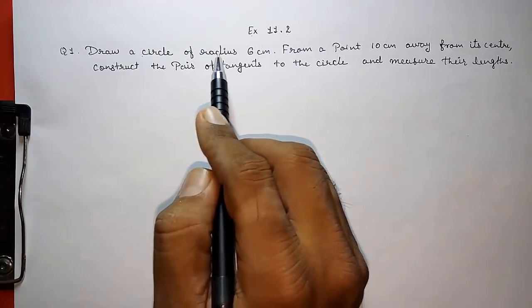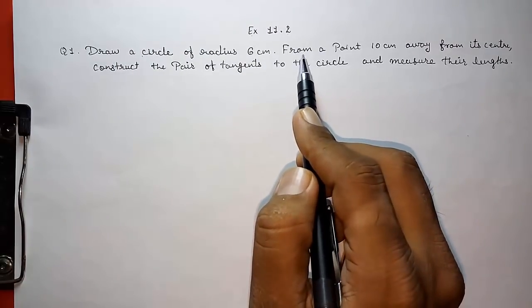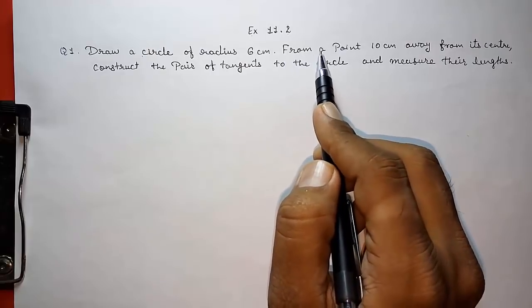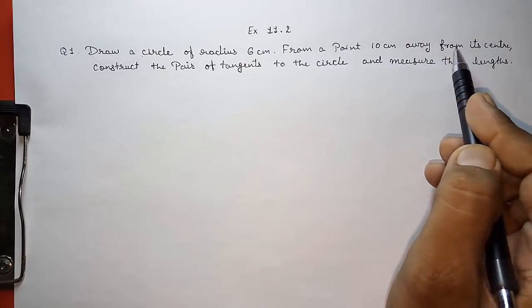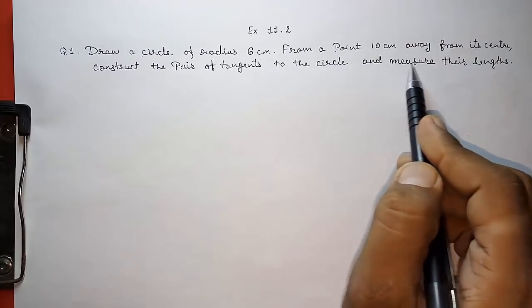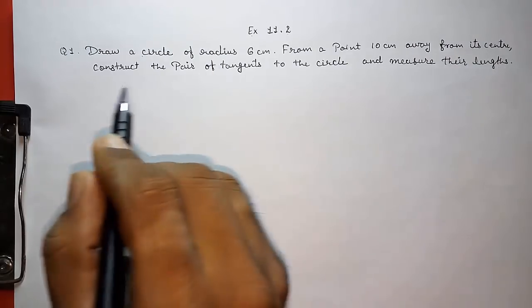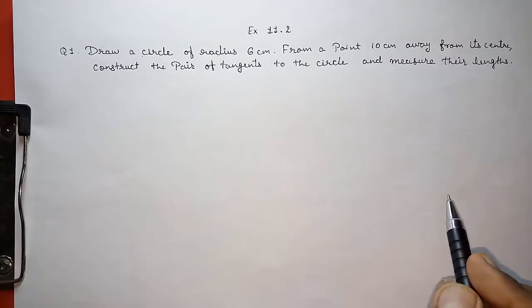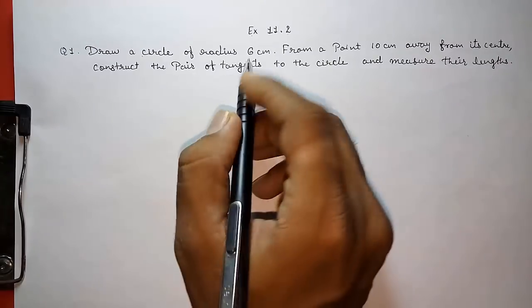Draw a circle of radius 6 centimeters and from a point 10 centimeters away from its center, construct a pair of tangents to the circle and measure their length. First, I am drawing a rough figure, then we are going to draw the correct figure.